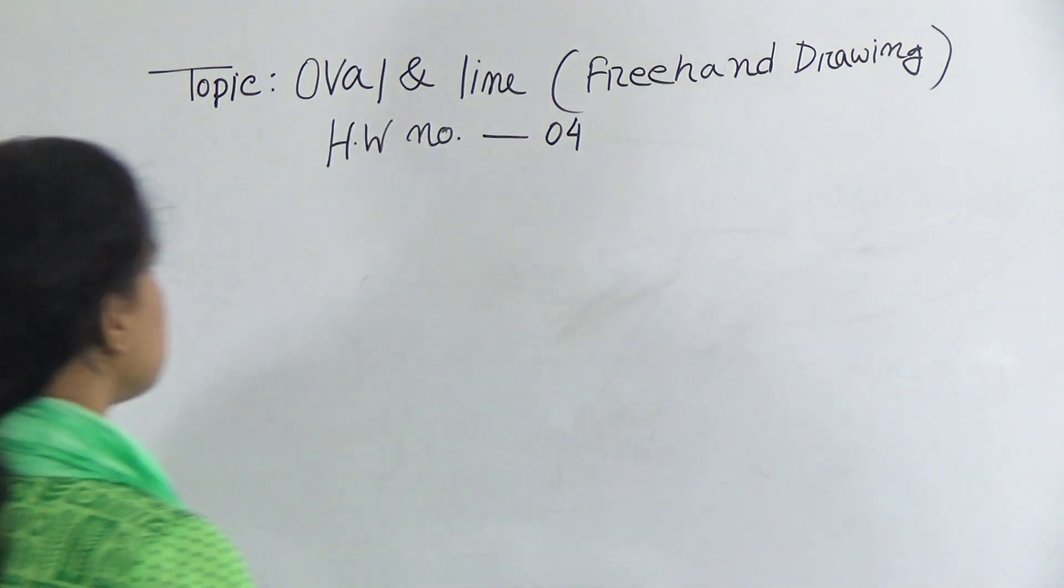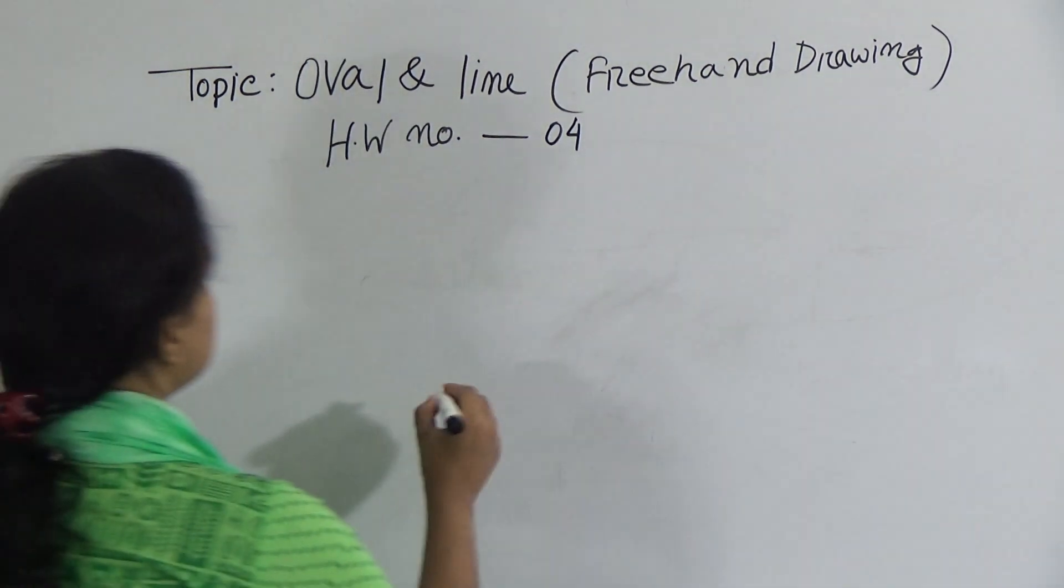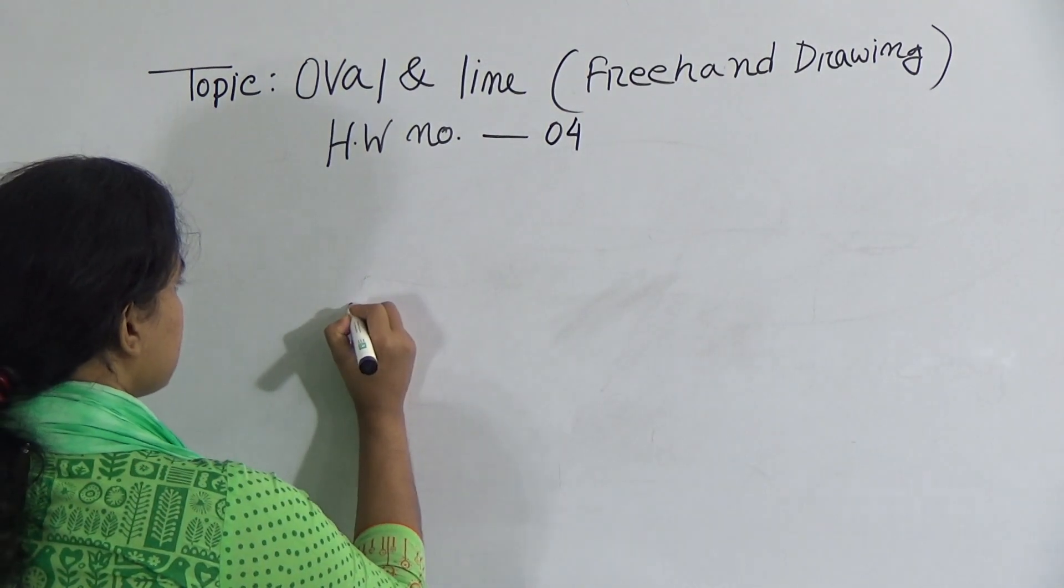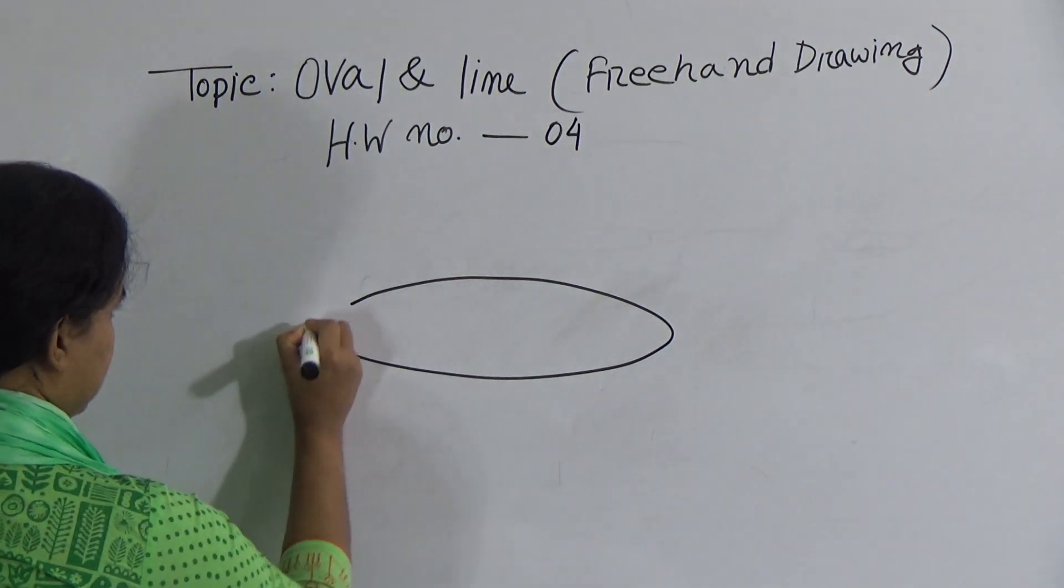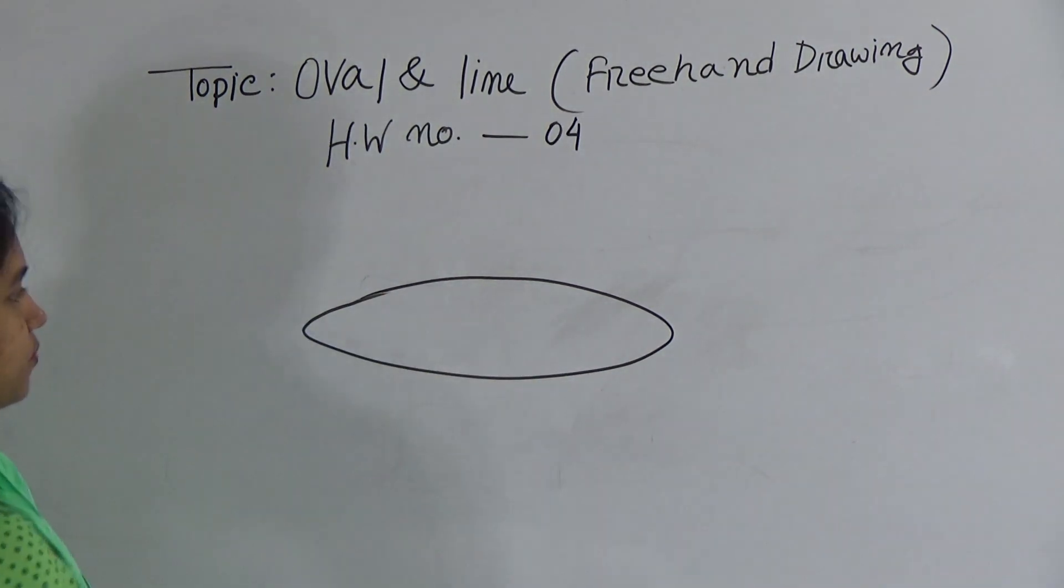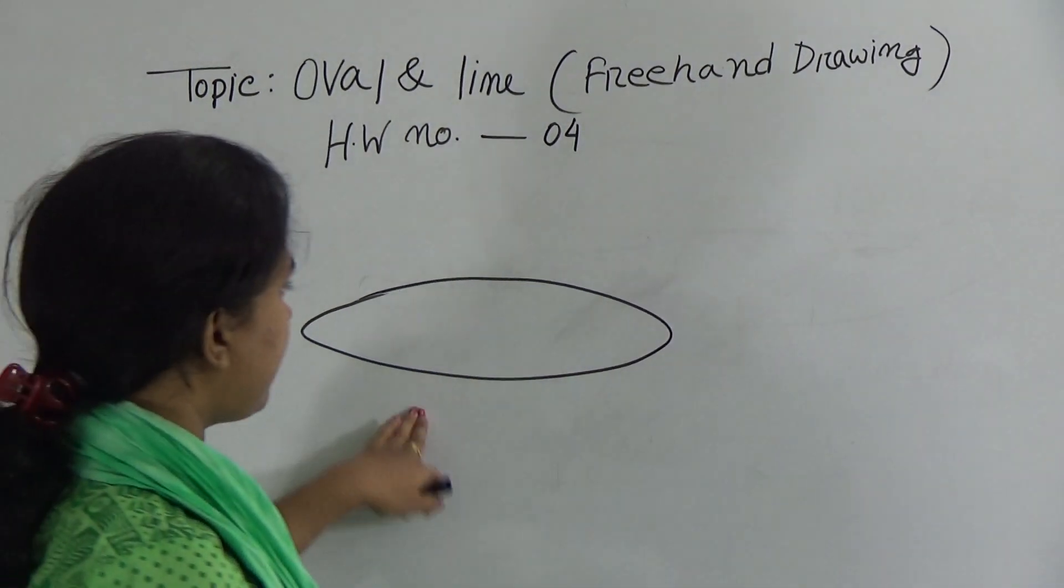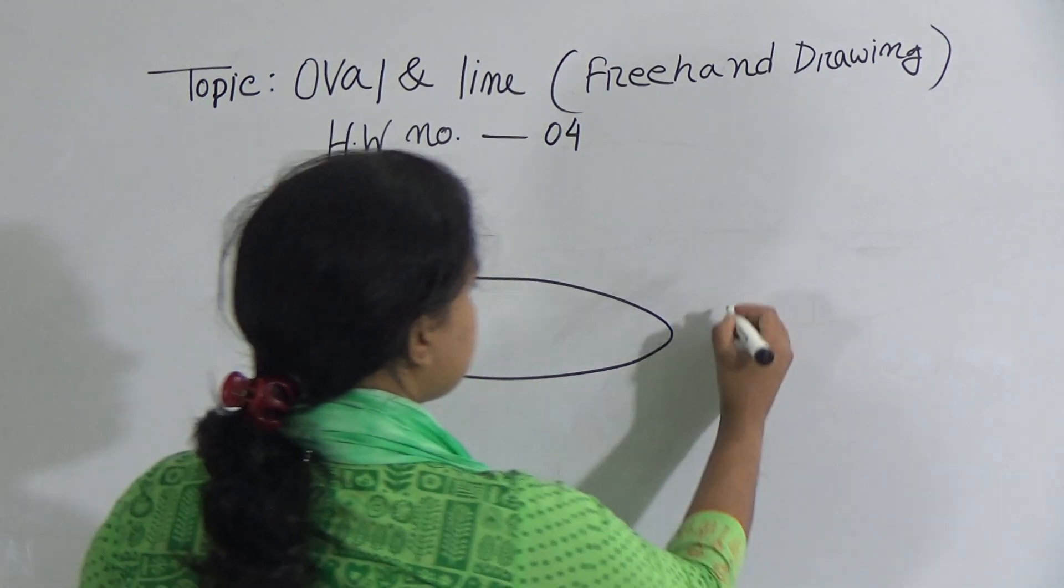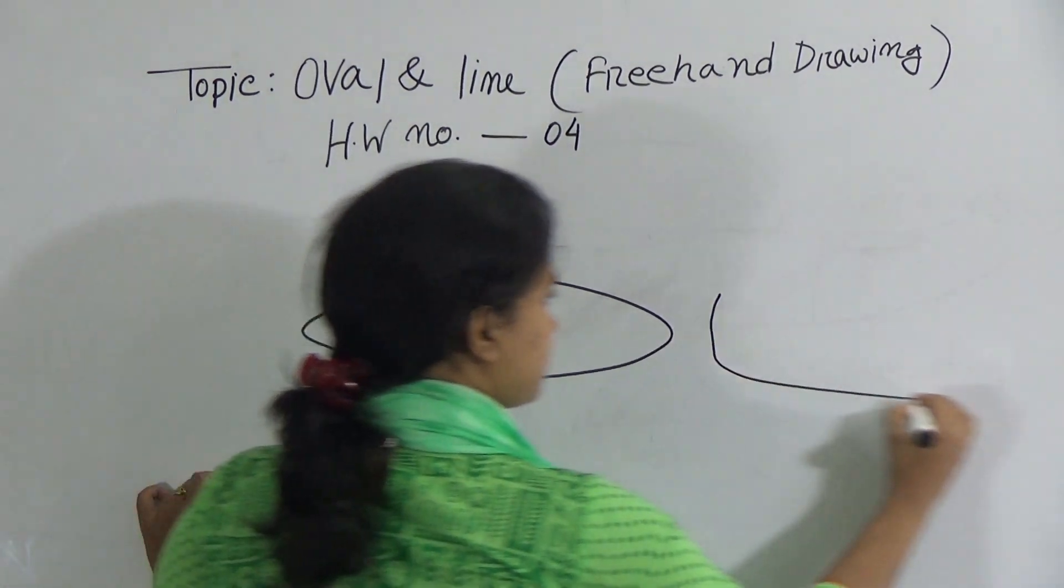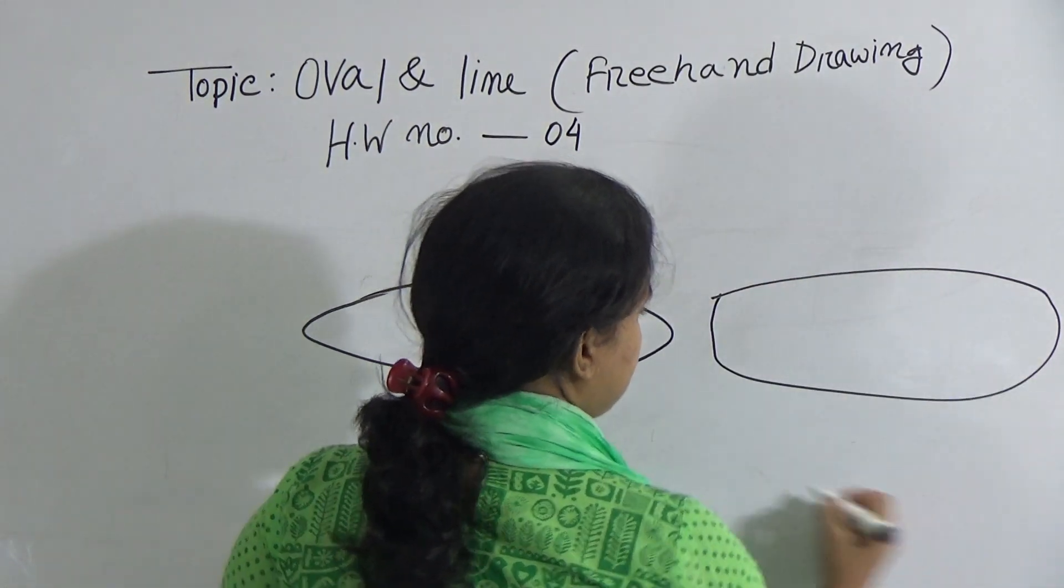Your today's class is oval. Oval is very easy topic. Look. Just draw like this. This one is oval. I want to share with you something that you do. And you won't do this. Like this. Maximum student draw like this type of oval. That means here look.